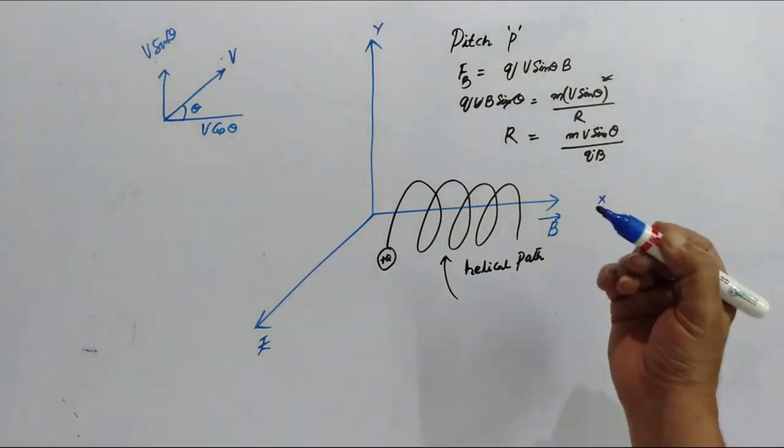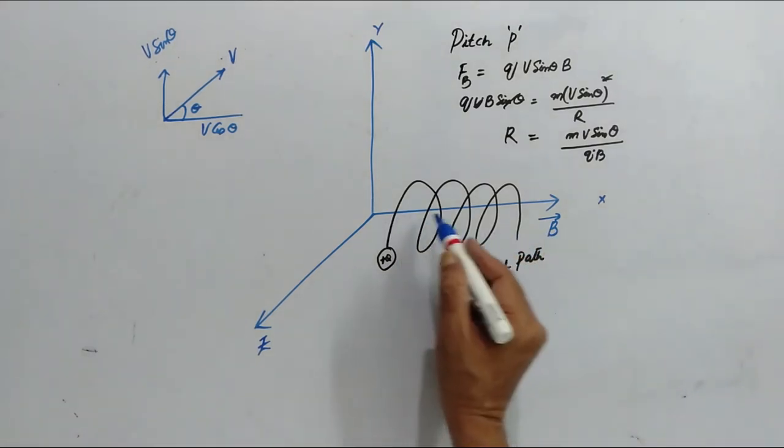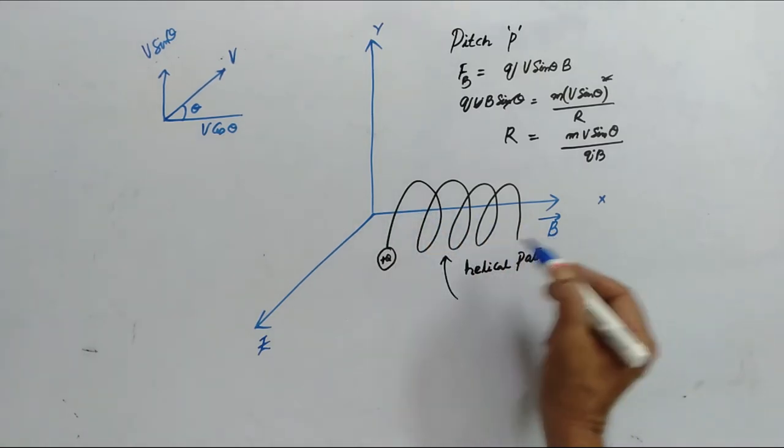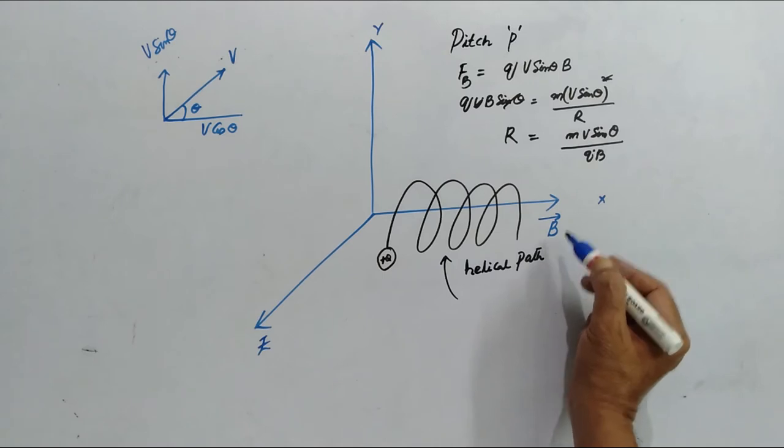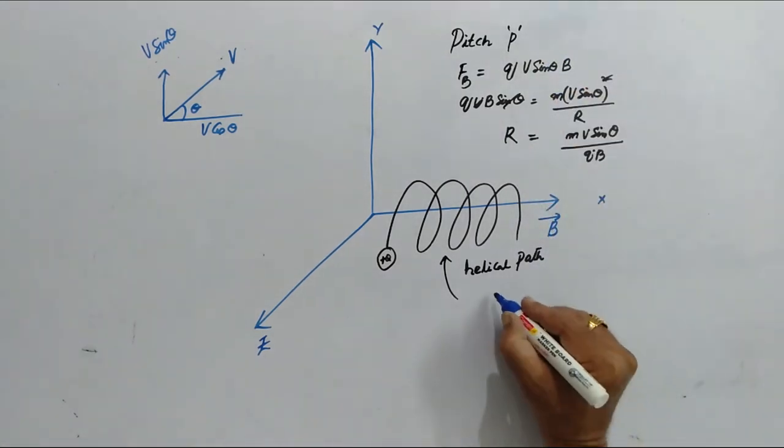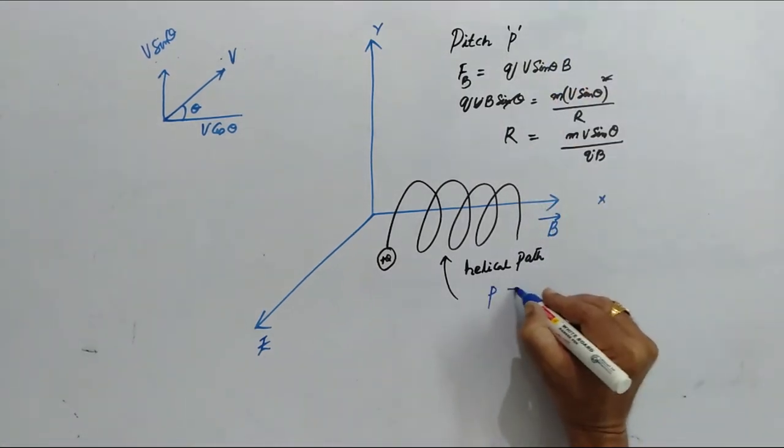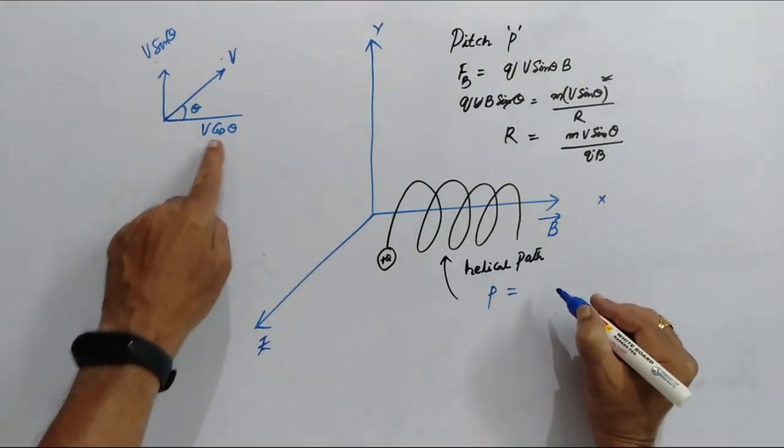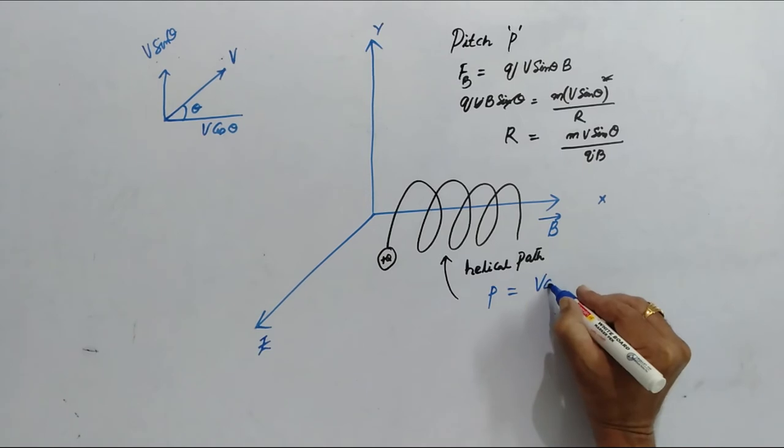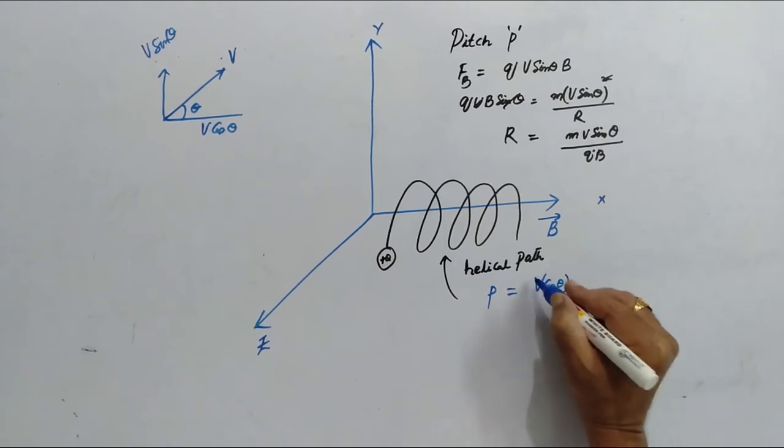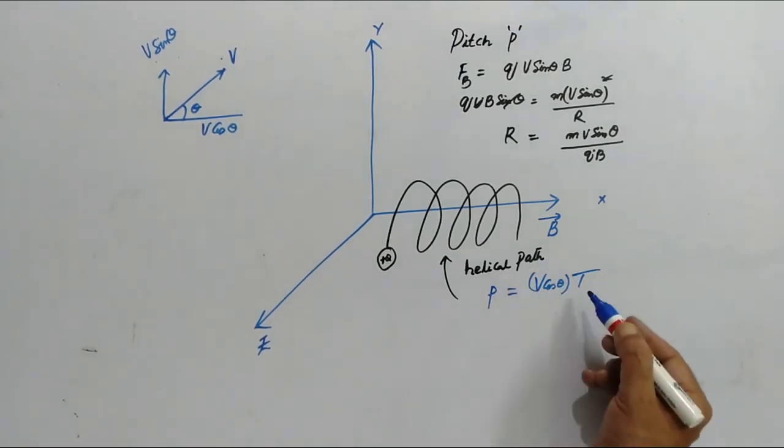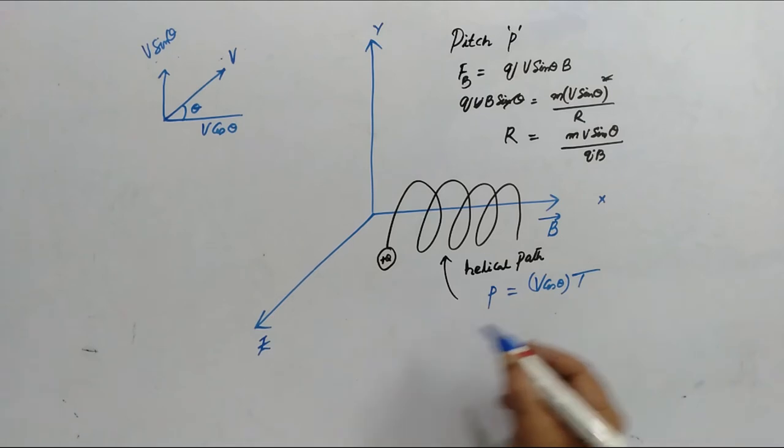Now, if you want to calculate the distance advanced in one rotation along B direction which we call it as P, to calculate P, we have to make use of this parallel component V cos theta and the time period T. So, to calculate helical path T is required.